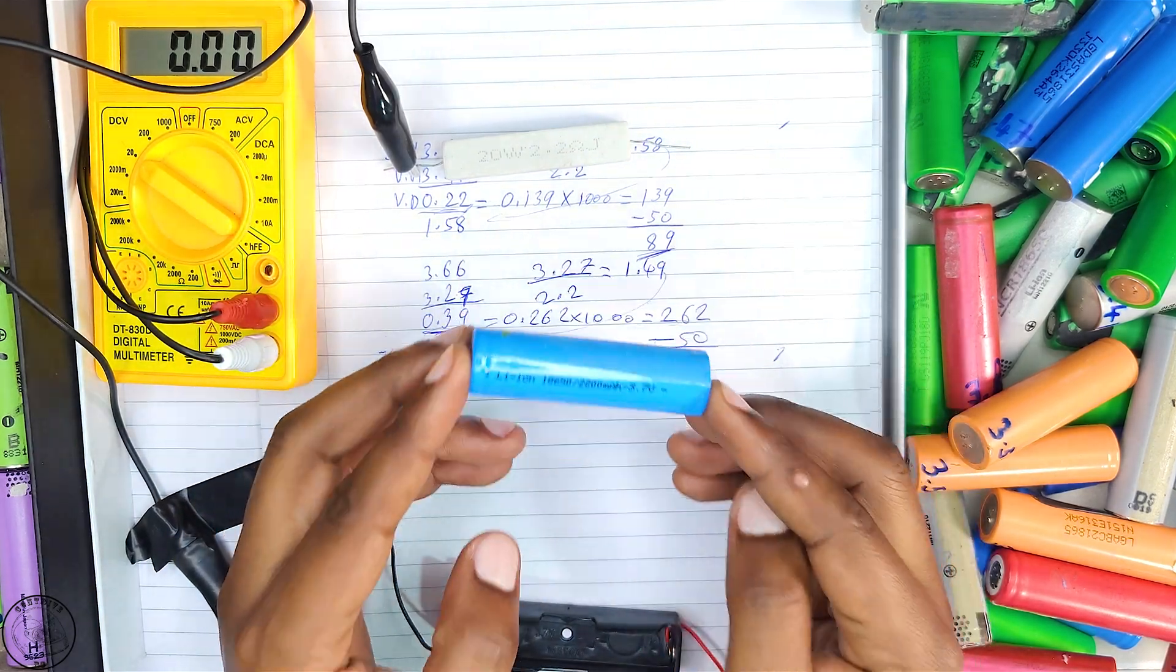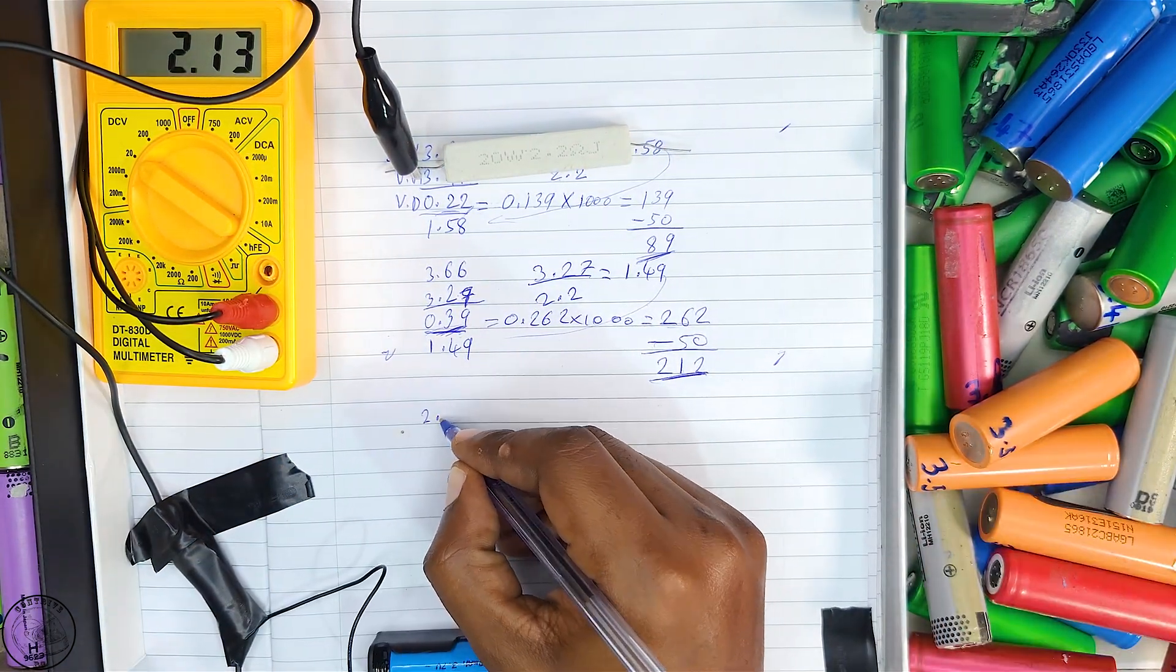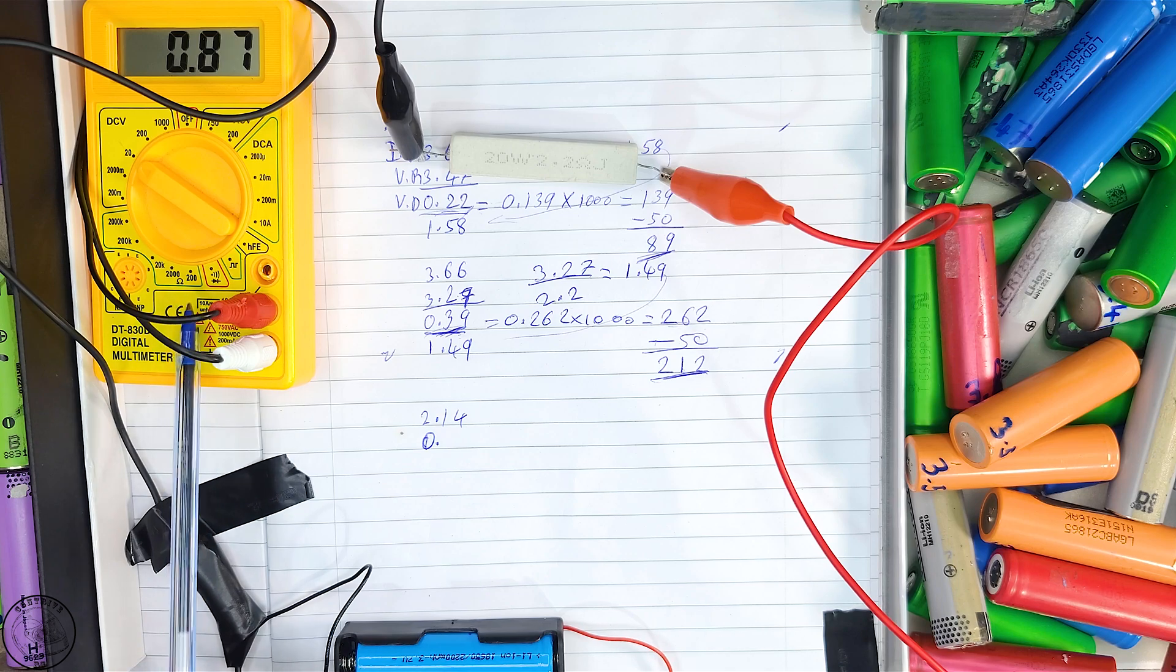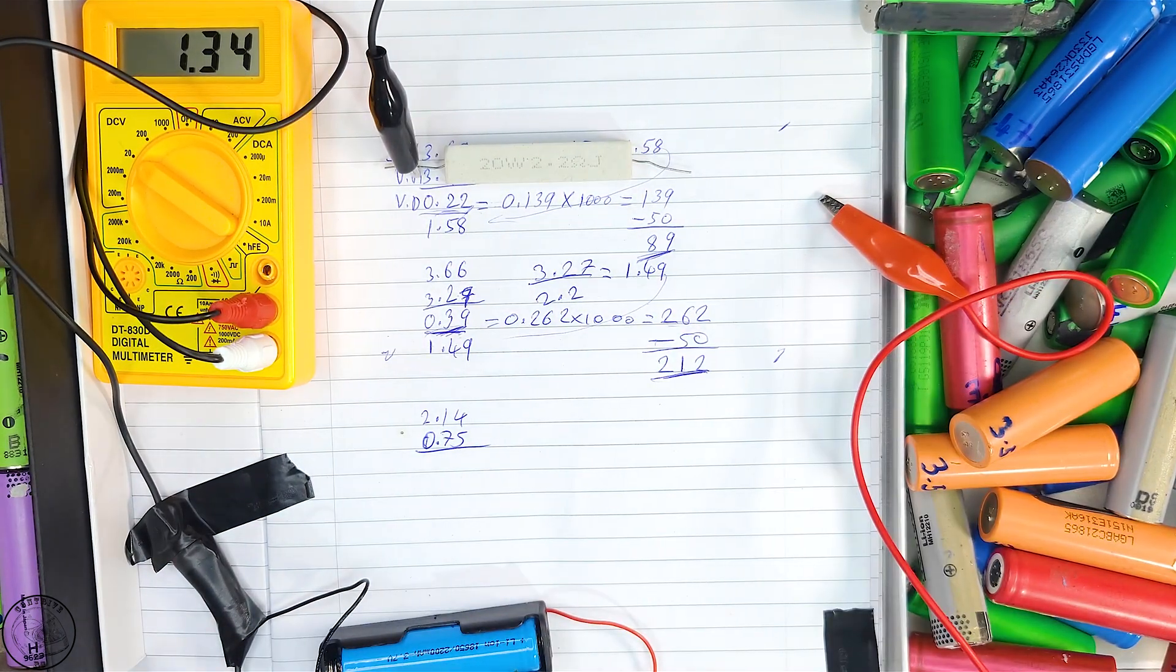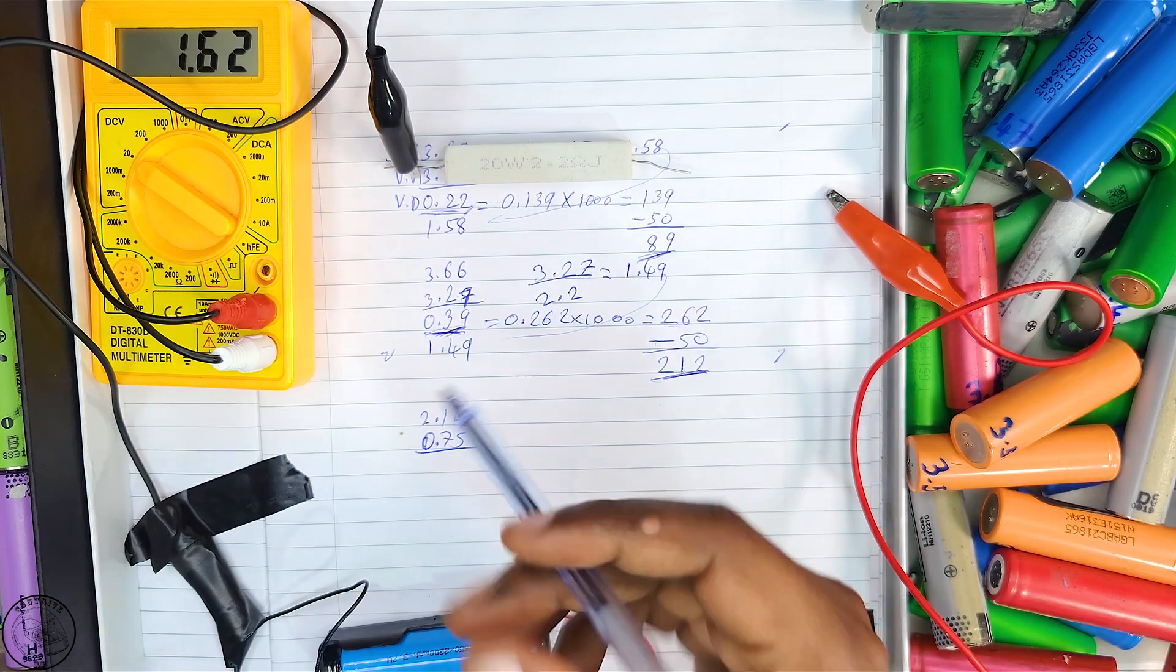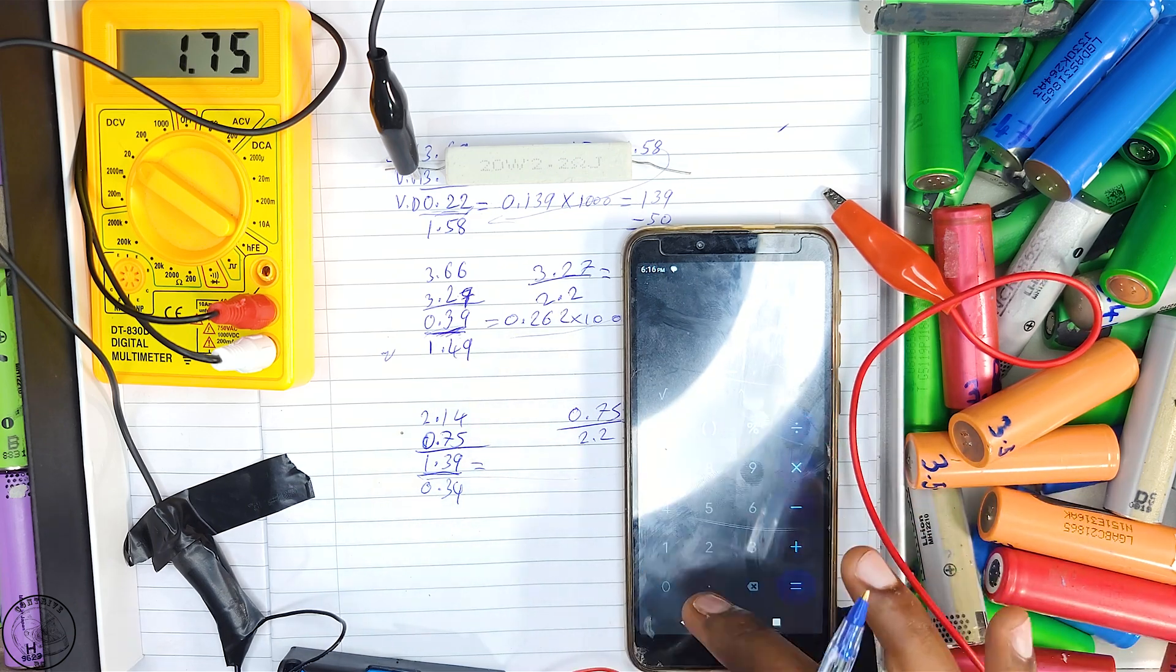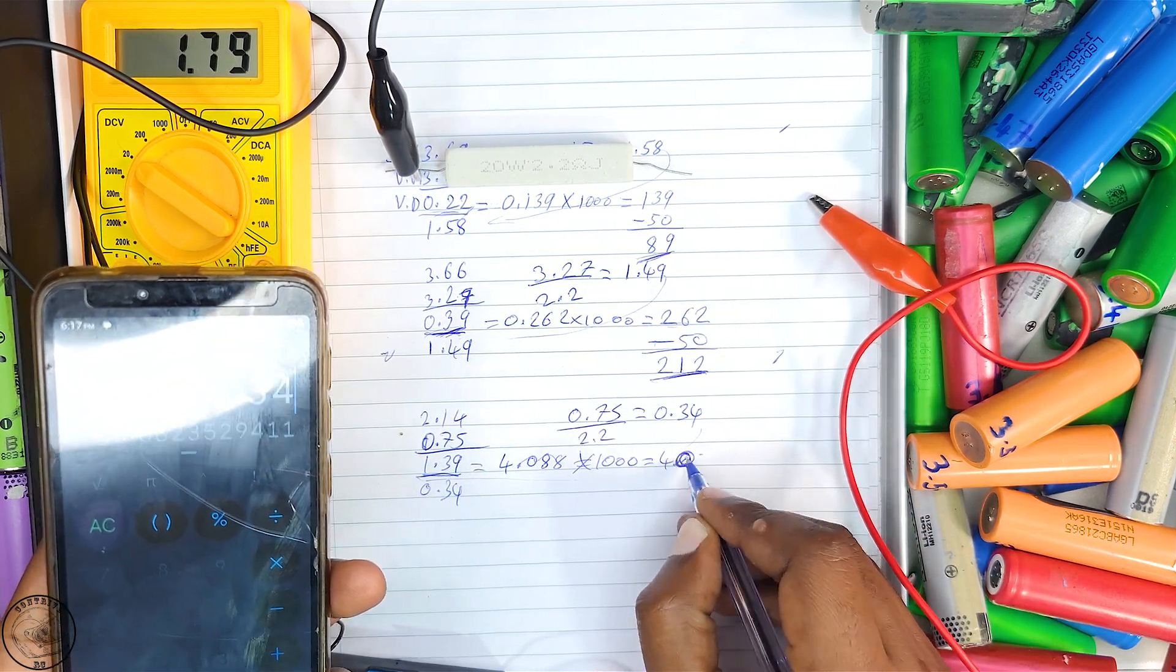Subsequently, I tested an unbranded lithium-ion cell from China, and the results surprised me. I encountered an extraordinarily high internal resistance of 4000 milliohms, which left me perplexed. I anticipated the worst cells would fall within 250 to 350 milliohms. I'd appreciate your thoughts on this unexpected result and how such a discrepancy could occur.